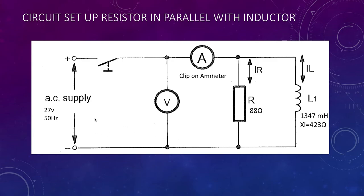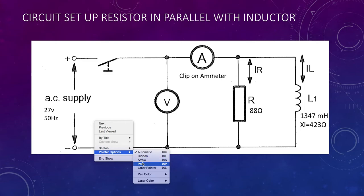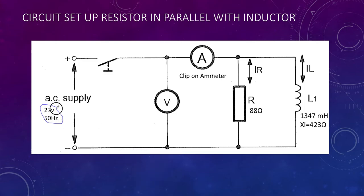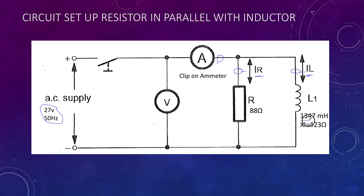Next we're going to repeat the whole process, replacing the capacitor with an inductor. We have a 27-volt supply and will measure the inductor current IL, the resistor current IR, and the overall supply current. Our inductor is 1347 millihenries, and calculation gives an XL of 423 ohms, while our resistor is at 88 ohms.